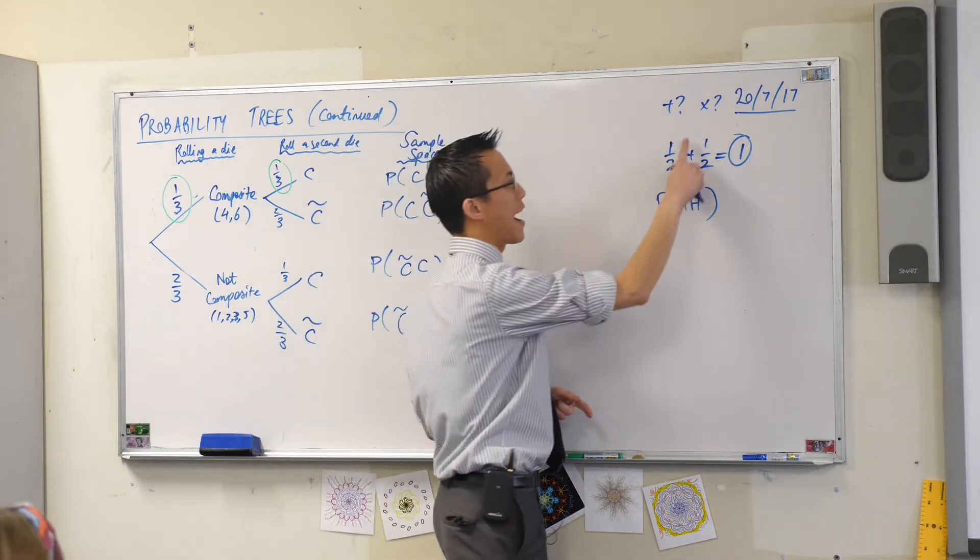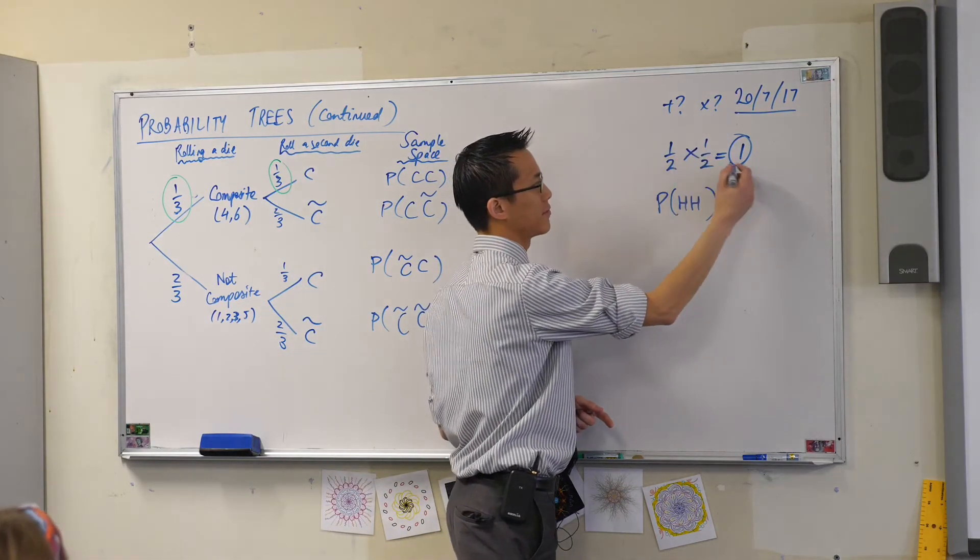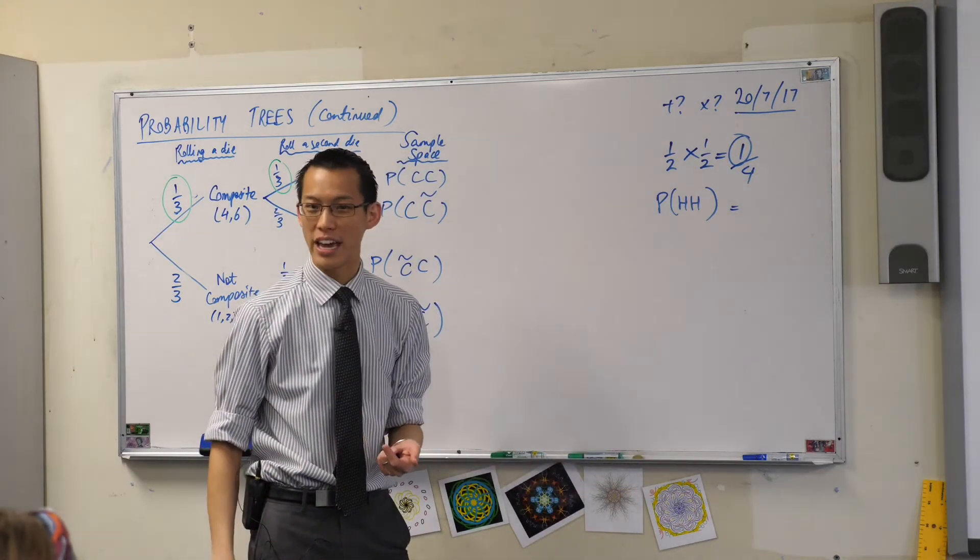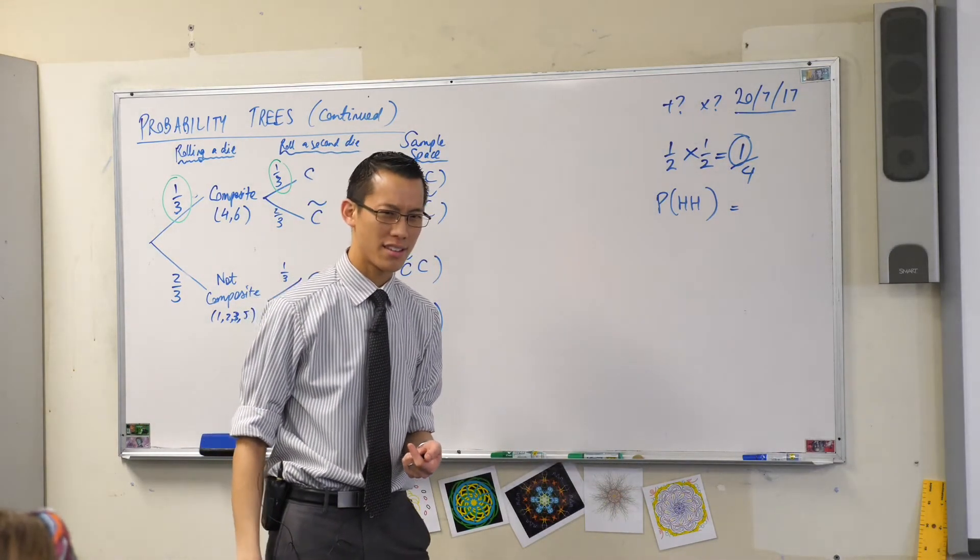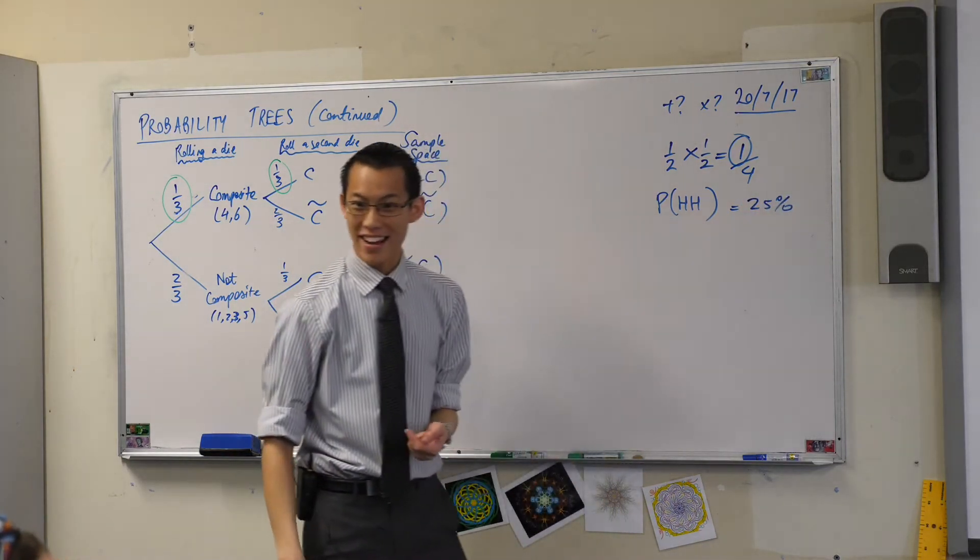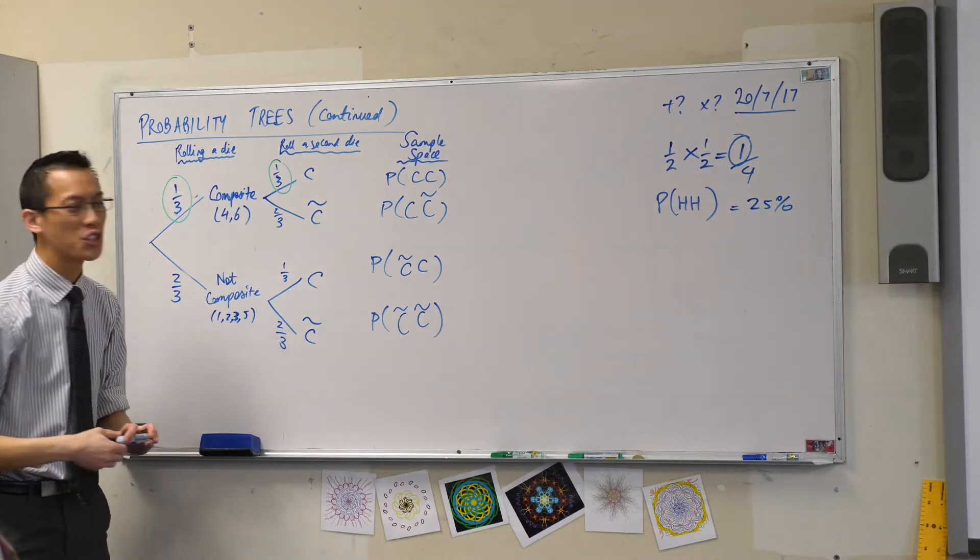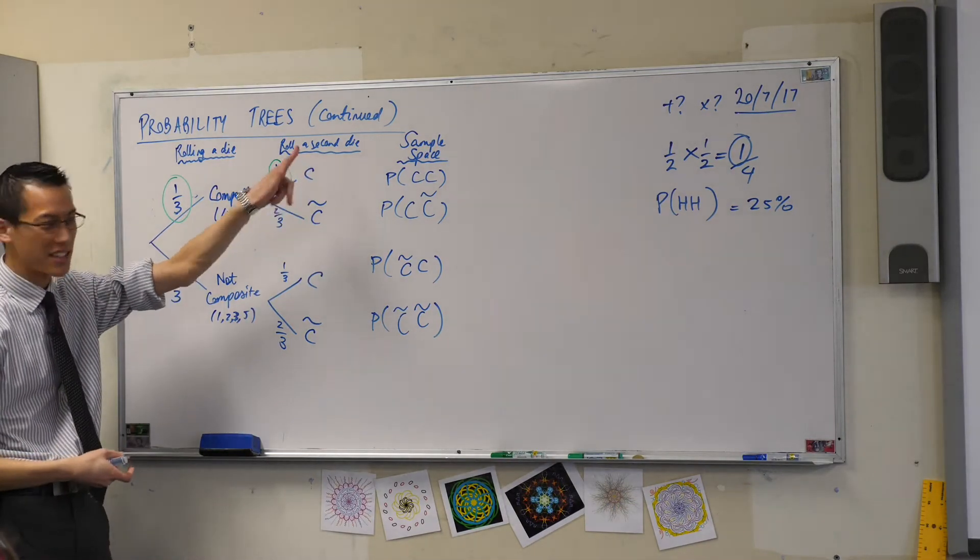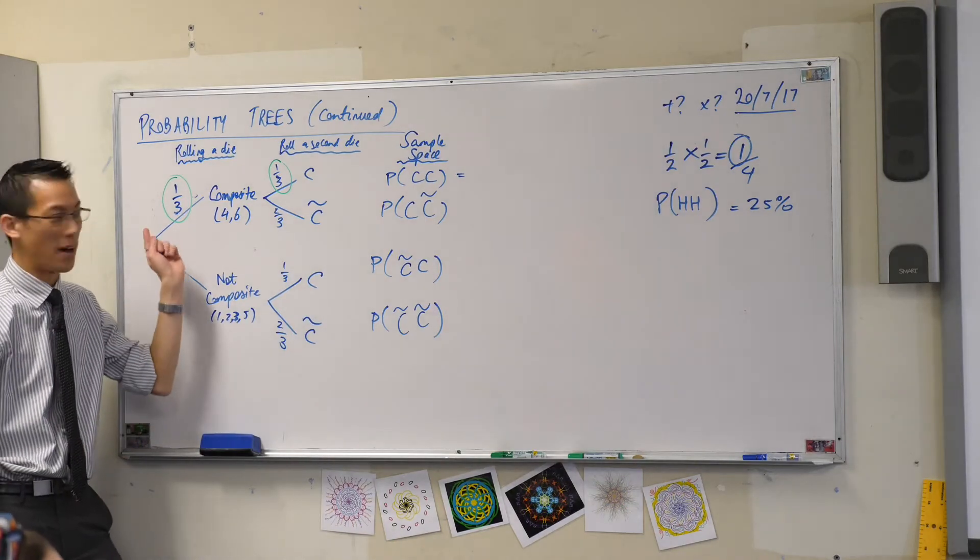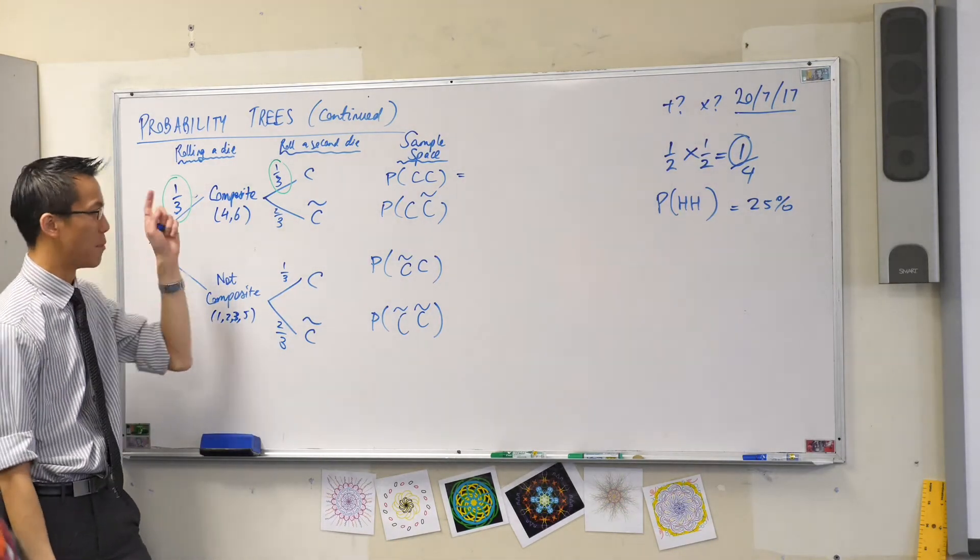In fact, it's a 25% chance. Does that make sense? Of course, it's a quarter, right? So what are we going to do as a conclusion? To work out the probability of getting a composite number twice in a row, I'm going to multiply across.